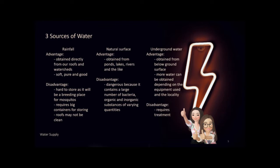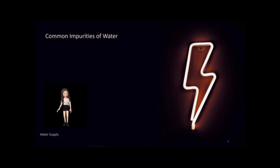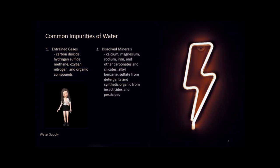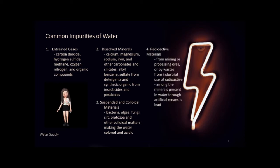The disadvantage of underground water is that because of various organic matter and chemical elements present, it requires treatments such as sedimentation, chemical filtration, and erosion. The common impurities of water include: (1) entering gases such as carbon dioxide, hydrogen sulfide, methane, oxygen, nitrogen, and organic compounds; (2) dissolved minerals like calcium, magnesium, sodium, iron, and other carbonates, silicates, alkyl benzene sulfate from detergents, and synthetic organics from insecticides and pesticides; (3) suspended and colloidal materials like bacteria, algae, fungi, silt, protozoa, and other colloidal matter making water colored and acidic; and (4) radioactive materials from mining or processing ores or industrial waste.